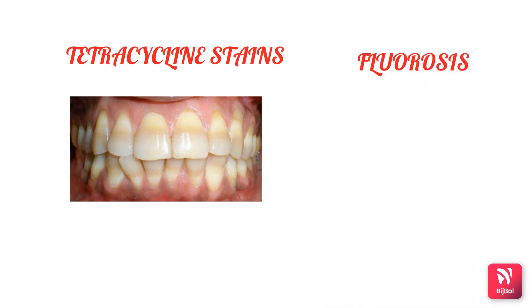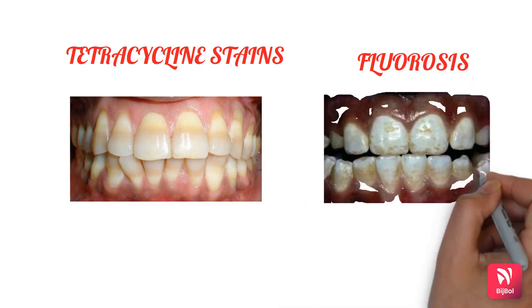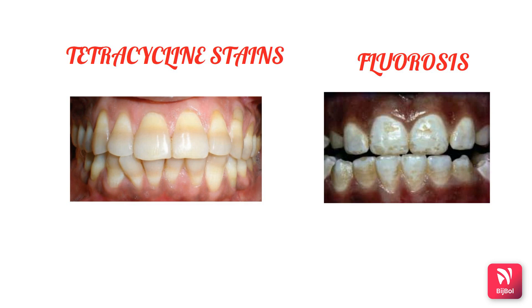Next we will see fluorosis. This may occur due to excessive ingestion of fluoride during tooth development, causing defects in the ameloblasts and improper calcification of the teeth. Fluorosis discoloration can range from white opaque spots to dark brown patchy discoloration, and severe fluorosis may even cause pitting and disfigurement of the enamel.